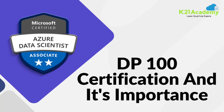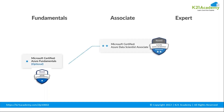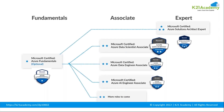The certification associated with data science on Microsoft Azure is called the DP-100 certification. Looking at the certification pathway, first is the fundamentals — AZ-900 — but that is optional. If you have the knowledge, you don't need that certification. You can directly go to the associate level, which is the Microsoft Azure Data Scientist Associate certification. This is what the badge looks like, and this is what you should be targeting.